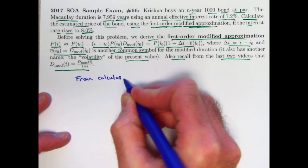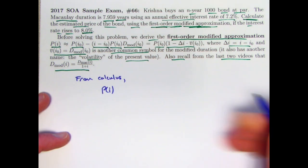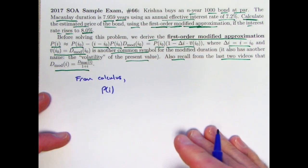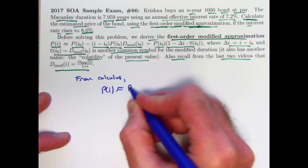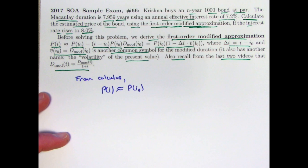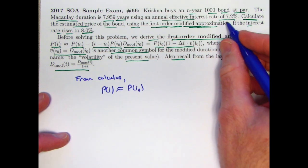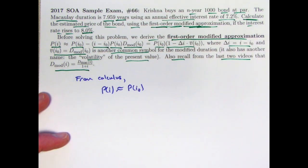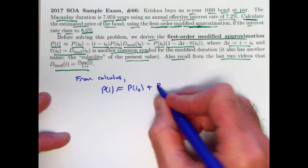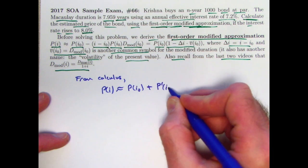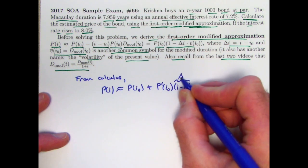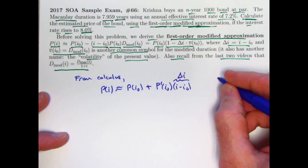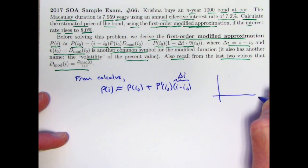We know that the value of this function p(i), assuming as the usual thing would be that it's differentiable, is approximately the value at the starting value for the input i0, which would again be the 7.2% or 0.072, plus, that would be a plus, p prime derivative at i0, times i minus i0, where again this could be called delta i. Why was that true?